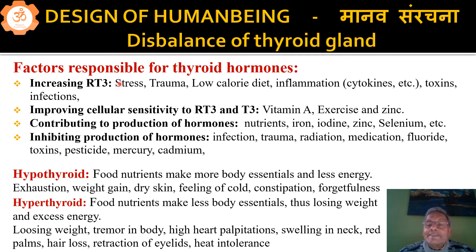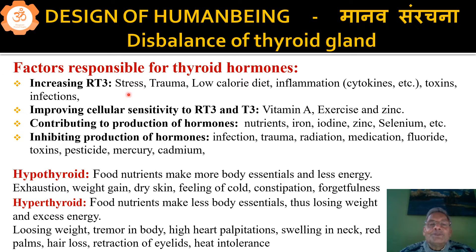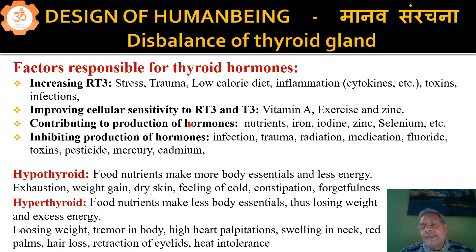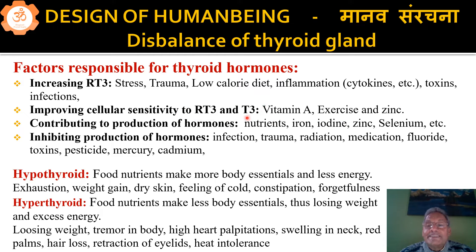Why does RT3 increase? Because of stress, trauma, low-calorie diet, inflammation, cytokines, toxins, or infection in the body — these all cause an increase in RT3, which reduces active T3. Cellular sensitivity to RT3 and T3 can be improved by taking proper amounts of vitamin A, doing exercise, and including zinc in the diet. This will improve T3 as well as RT3 balance.